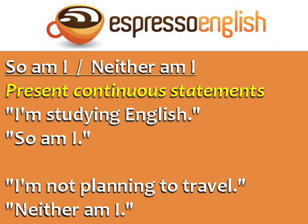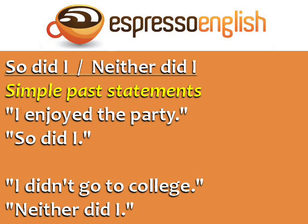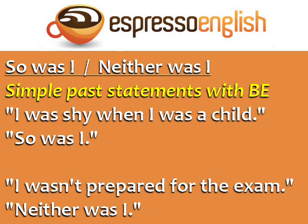So am I and neither am I can also be used in response to present continuous statements. 'I'm studying English' — so am I. 'I'm not planning to travel' — neither am I. Use 'so did I' and 'neither did I' in response to simple past statements. 'I enjoyed the party' — so did I.